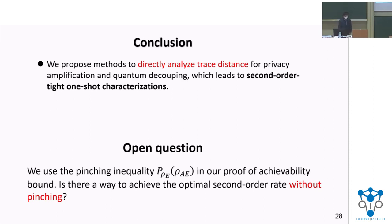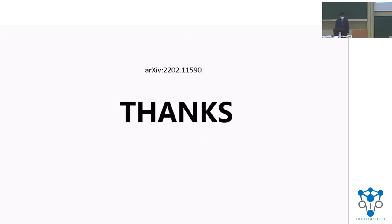In conclusion, we propose the method to directly analyze the trace distance for privacy amplification and quantum decoupling, which leads to a second-order tight one-shot characterization. For an open problem, we use the pinching inequality in our proof of the achievability bound. Is there a way to achieve the optimal second-order rate without pinching? Thank you for listening.